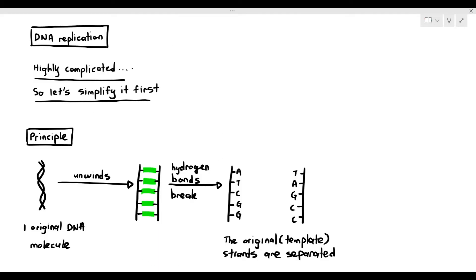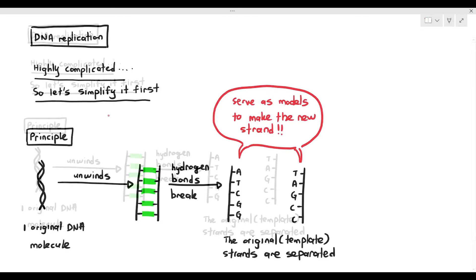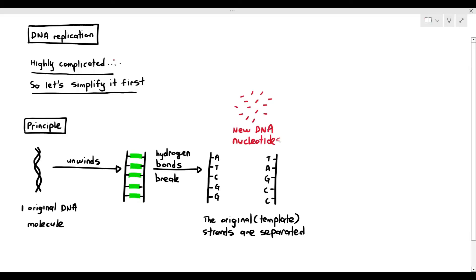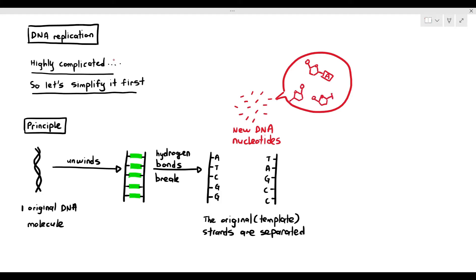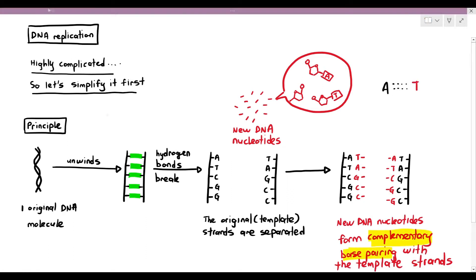The two original or template strands are separated. The reason we call them template strands is because they are used as a reference to make the new DNA strand. If you want to make identical DNA molecules, you first have to understand how the original looks, and the original strands are referred to as the template strands. The new DNA nucleotides — which can have bases A, T, C, or G — will form complementary base pairings with the template strands, where A will always pair with T, and G will always pair with C.